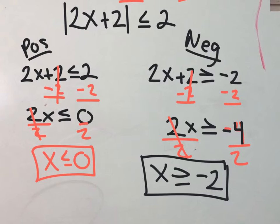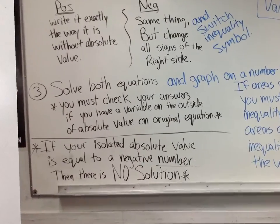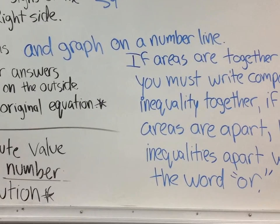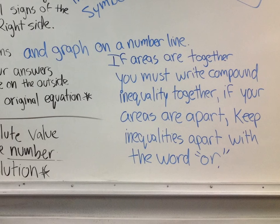Anyhow, we have two answers. And, ladies and gentlemen, our notes, if we go back to the notes over here. We have solved both equations. But remember, the blue ink right here is the extra notes that we have for inequalities. So we solved both equations and graph on a number line. So not only do we solve, but we also need a graph on a number line. If the areas are together, you must write the compound inequality together. If your areas are apart, you have to keep the inequalities apart with the word or. So we need to see this demonstrated.